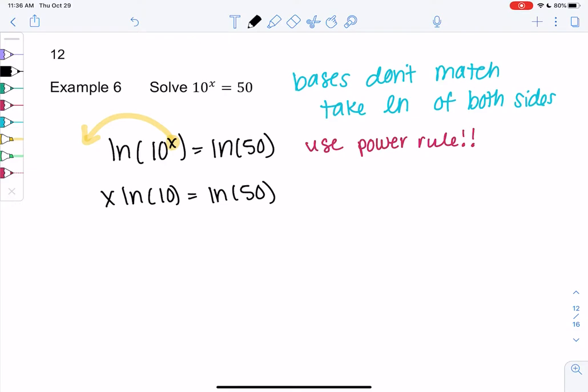ln of 10 and ln of 50 are just ugly numbers. That's all they are. So we divide by ln of 10 just like we would divide by 5. Divide by ln of 10.